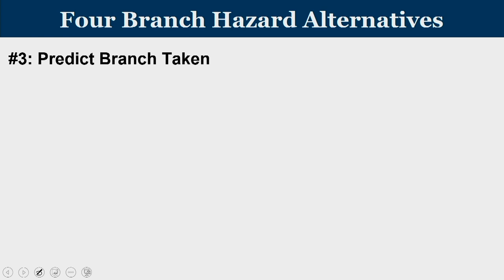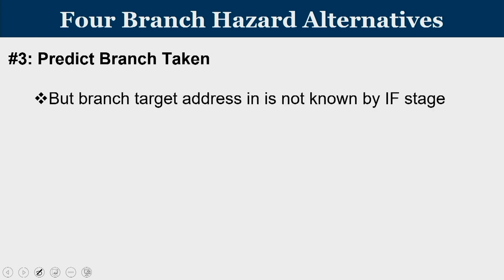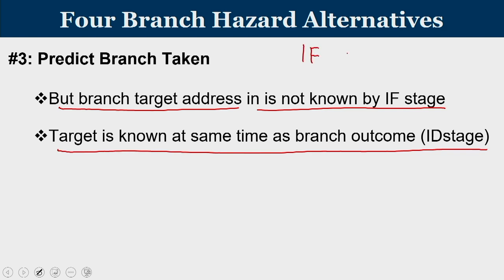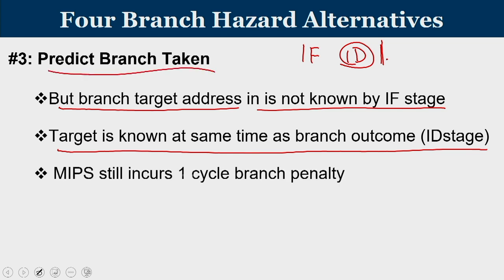The third alternative is prediction taken. If we predict the branch is taken, we need to jump to an alternative address — not the adjacent one. However, the branch target address is not known at the IF stage; it is known at the same time as the branch outcome, at the decode stage. So only at the end of the decode stage do we know the target address. If the prediction is taken, we will incur one cycle of branch penalty, since we cannot fetch from the target address until that point. So we may have to incur a stall if the prediction is to be taken.